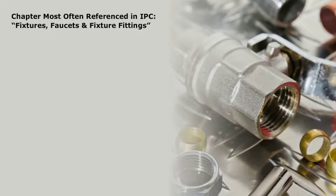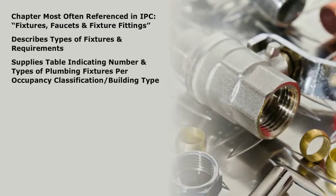Fixtures, Faucets, and Fixture Fittings. It describes the types of fixtures and their requirements and supplies a table that indicates the number and types of plumbing fixtures required for each occupancy classification or building type. This table is discussed later in this course.